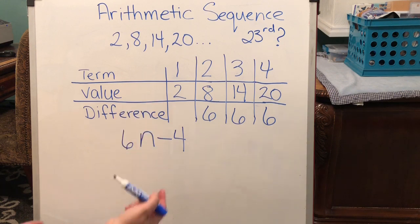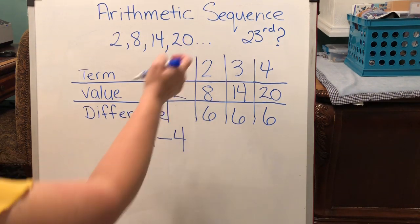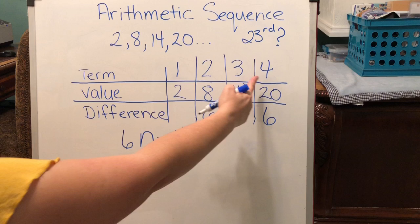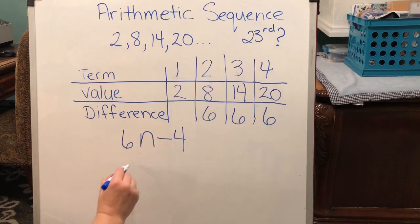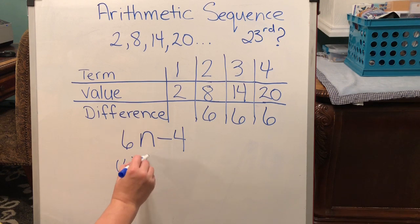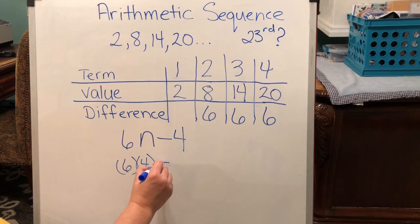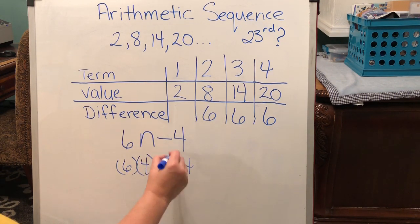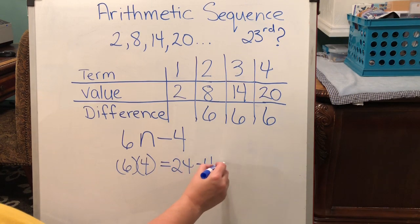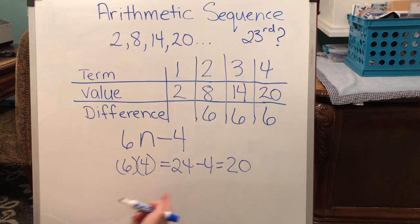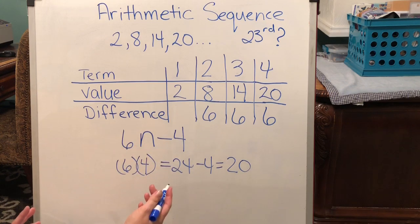So, 20 is the fourth term, 4. So, 4 times 6 is 24. 24, now I want to take away 4, and that gives me 20. Again, my solution works.